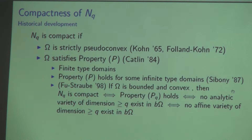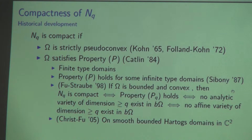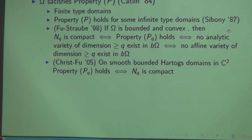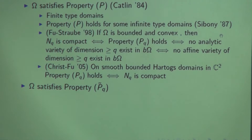The next equivalence between property P_Q and compactness of N_Q is due to Michael Christ and Şahutoğlu, where they proved that on smooth bounded pseudoconvex domains in C^2, compactness of the D-bar Neumann operator and property P_Q are equivalent. So this was the second example of equivalence.